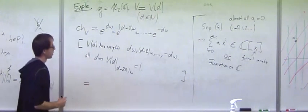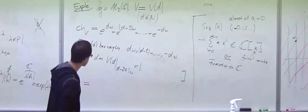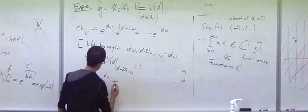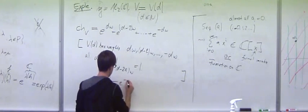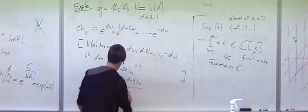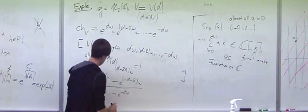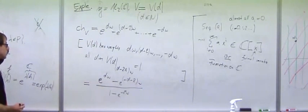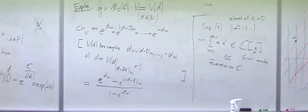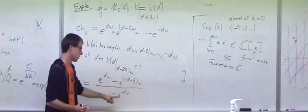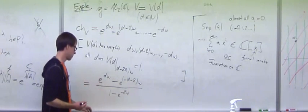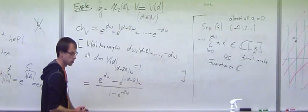So one can write this down as a rational function. E to the D omega minus E to the minus D minus 2 omega divided by 1 minus E to the minus 2 omega. So let's think about this for a while, because this is a bit confusing. So if we take this interpretation of the character as an element of the group algebra, then somehow this doesn't make sense, because this is not an element of the group algebra. Oh no, this is, well, it is, but it's somehow... It is, you just wrote it wrong. Yeah, I just wrote it wrong.